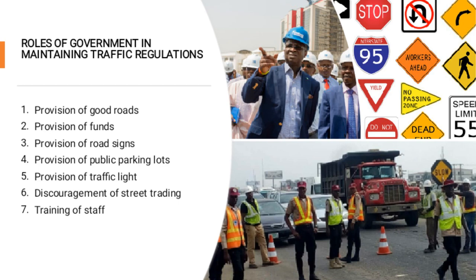4. Provision of parking lots — the provision of parking lots will reduce congestion on the roads as more people will stop parking their cars along the road in busy areas. 5. Provision of traffic lights — traffic lights should be provided at strategic junctions and the government should ensure such lights function properly at all times to avoid confusion and prevent accidents. 6. Discouragement of street trading — street trading causes obstruction on the road, so the government should discourage it. 7. Training of staff — traffic officials should be properly trained to do their job well.